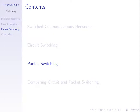In communication networks, we send data from one station to another via a set of intermediate devices called switches. There are different approaches for those switching devices to forward data through the network. We've mentioned circuit switching, developed for telephone networks, where before we transfer data we set up a connection or circuit, and then we transfer data.